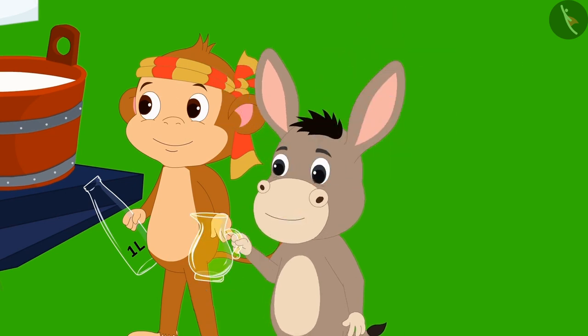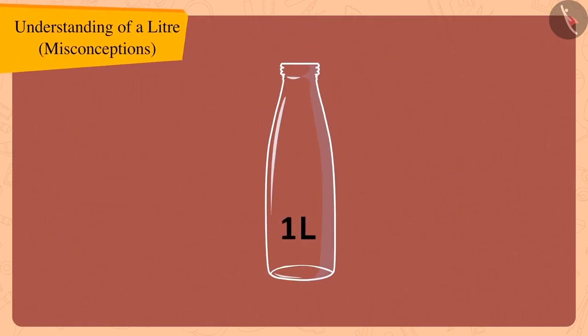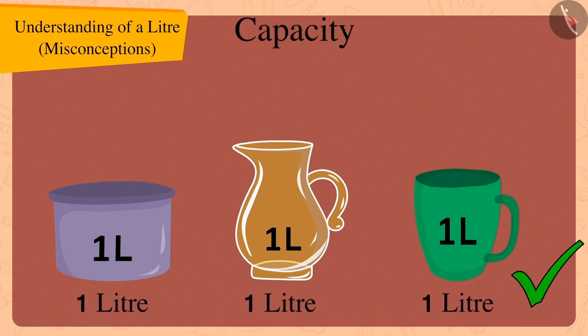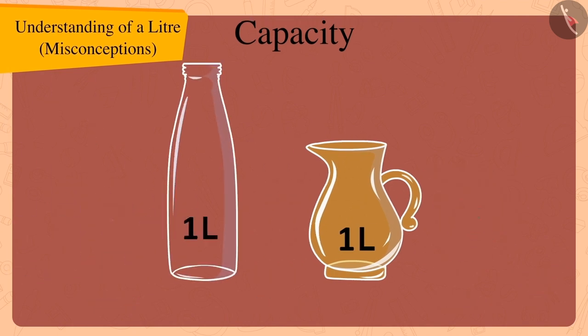Bholla now understood. Children, remember that it is not necessary that only a one litre bottle has the capacity of one litre. Capacities of different types and sizes of utensils can also be the same. Just like we saw here that the capacity of both the bottle and jug is one litre.